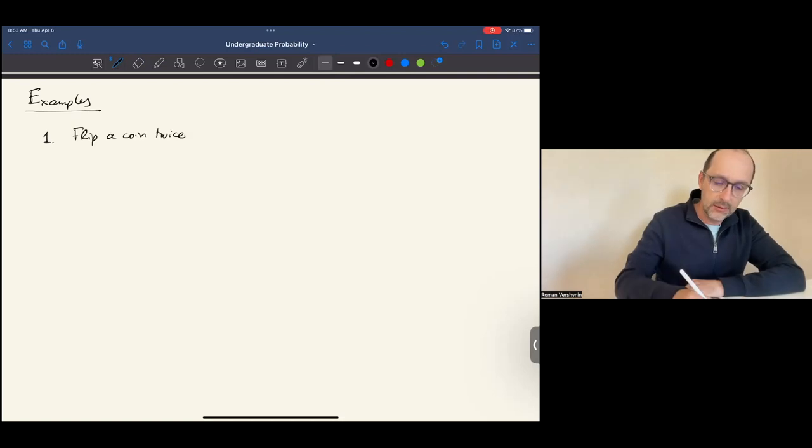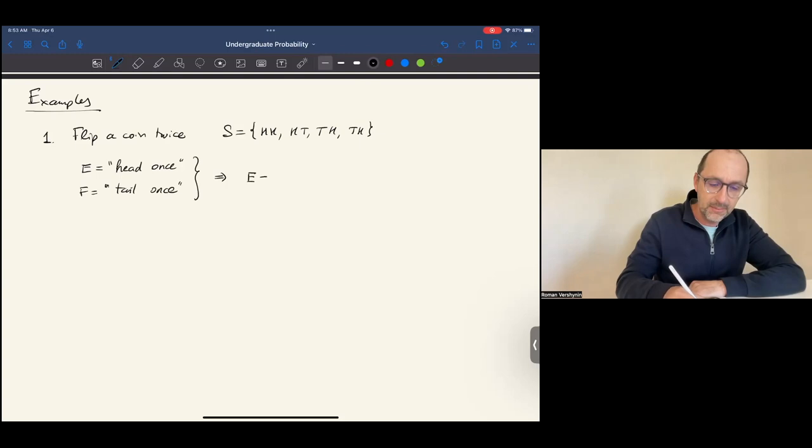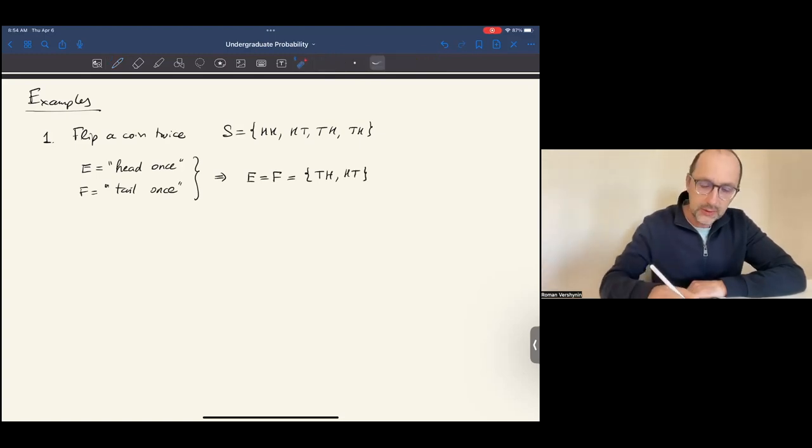Now let's consider examples. Example 1. Flip the coin twice. The sample space, as we know, consists of four outcomes. Four possible ways the two coins can come up. Let's look at these two events. E is that the head comes up once. And F is that the tail comes up once. In this case, it is the same event. E and F are the same. They just consist of the two outcomes TH and HT. Because only then, only for these two outcomes, do we have the tail only once, equivalently the head only once.